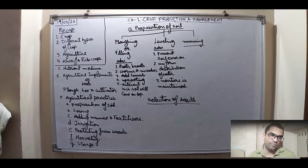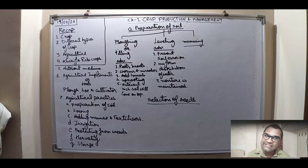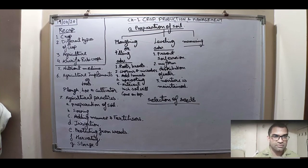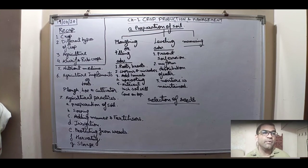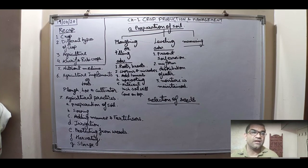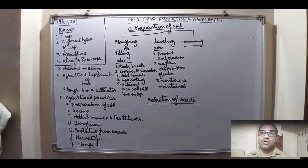Kharif crops are the crops which are grown in the rainy season, like paddy, rice, and groundnut. Rabi crops are grown in the winter season, like cotton and maize. We cannot grow rabi crops in the kharif season because they may get damaged due to heavy rainfall.